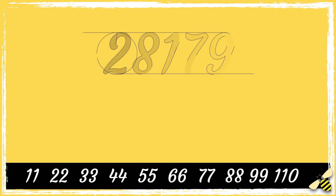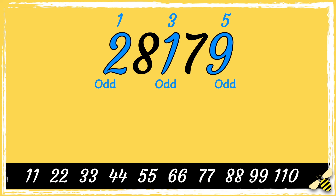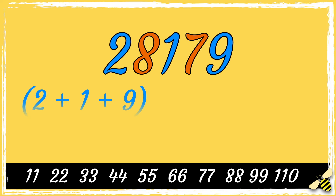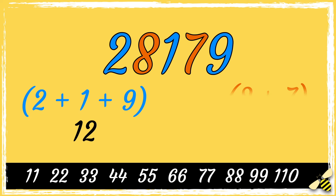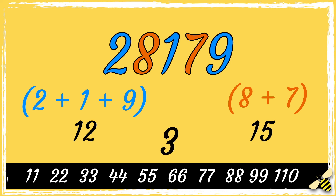Here's one more example: 28179. Let's look at the odd digits and the even digits. Adding the odd digits: 2 add 1 add 9 is 12. Then the even digits: 8 add 7 is 15. The difference between 12 and 15 is 3. 3 is not divisible by 11, so 28179 is not divisible by 11.